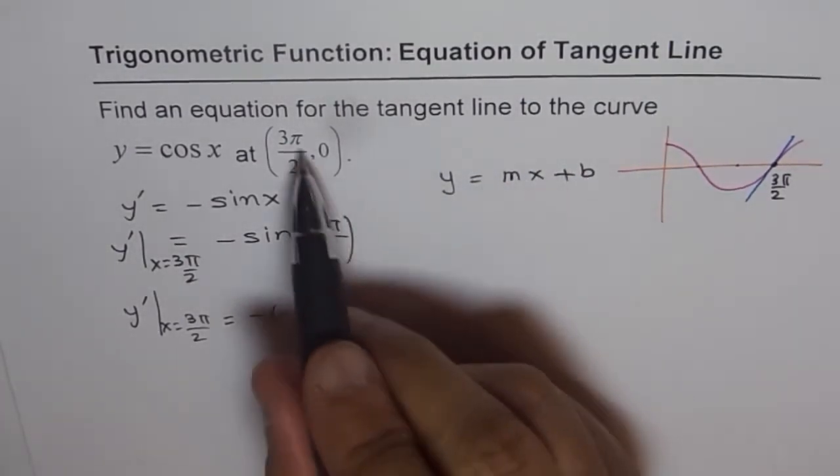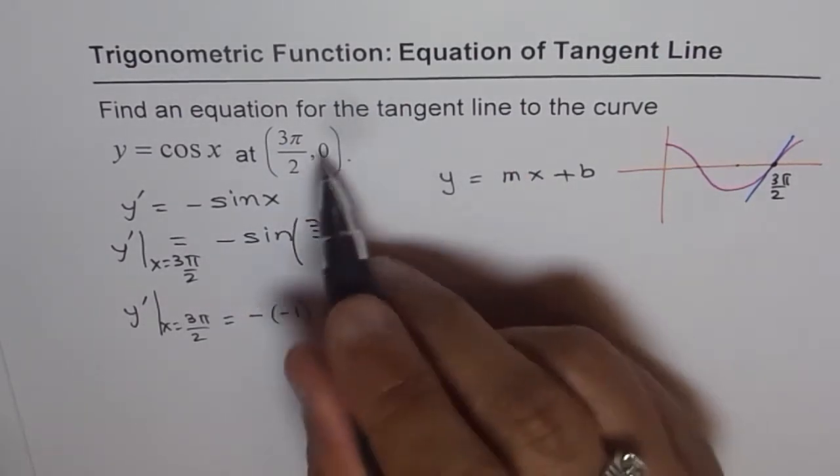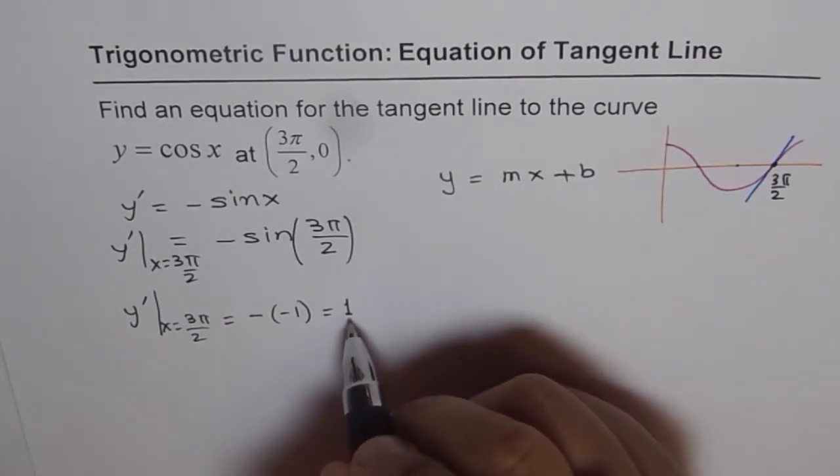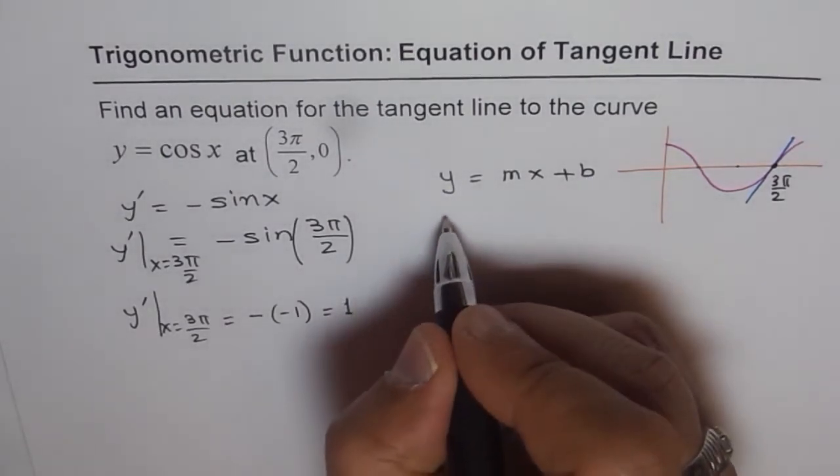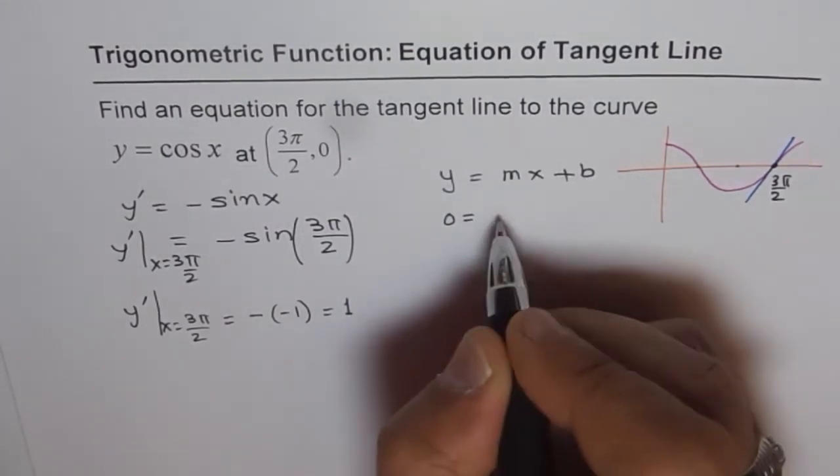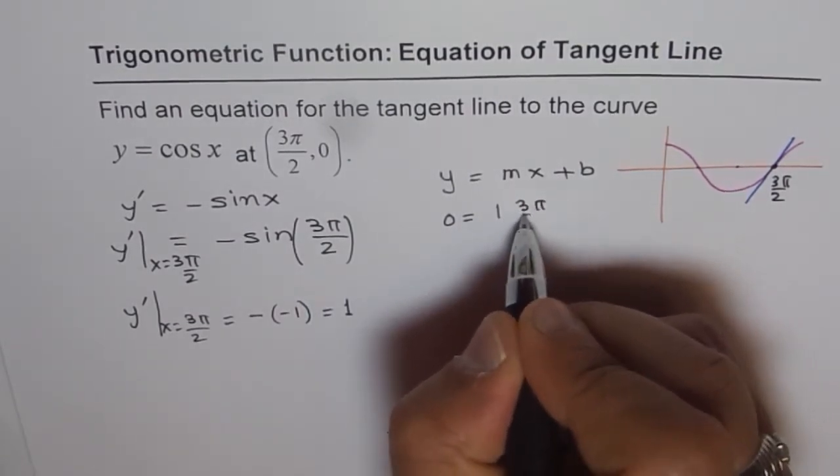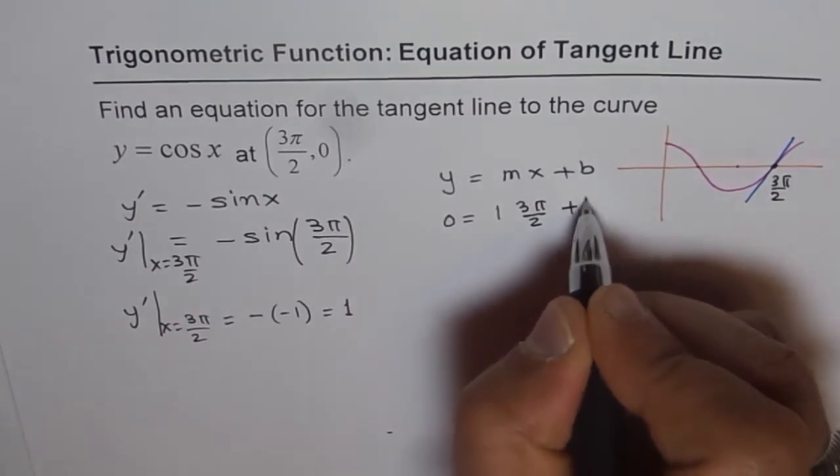Now the point is 3π/2, 0. So we will put x as 3π/2, y as 0, and slope as 1. So we get 0 equals 1 times 3π/2 plus b.